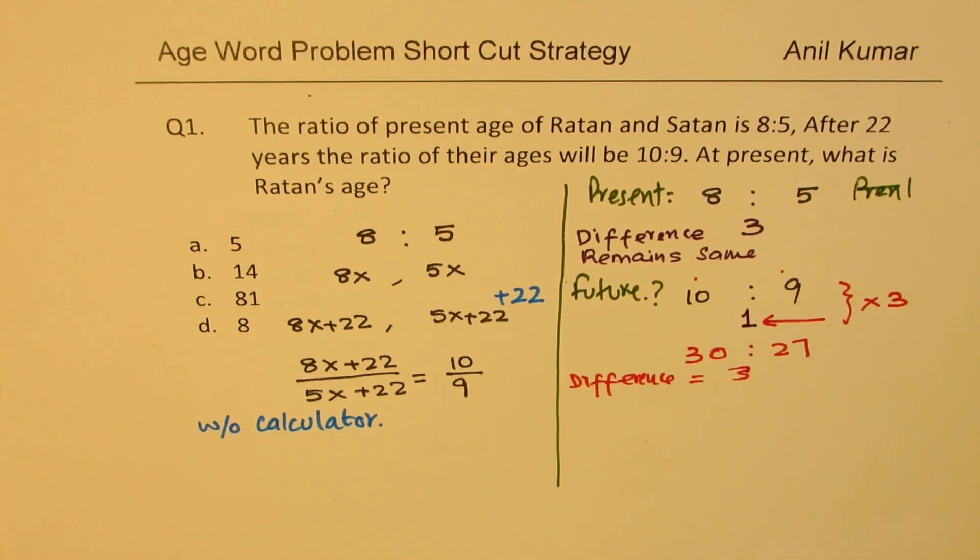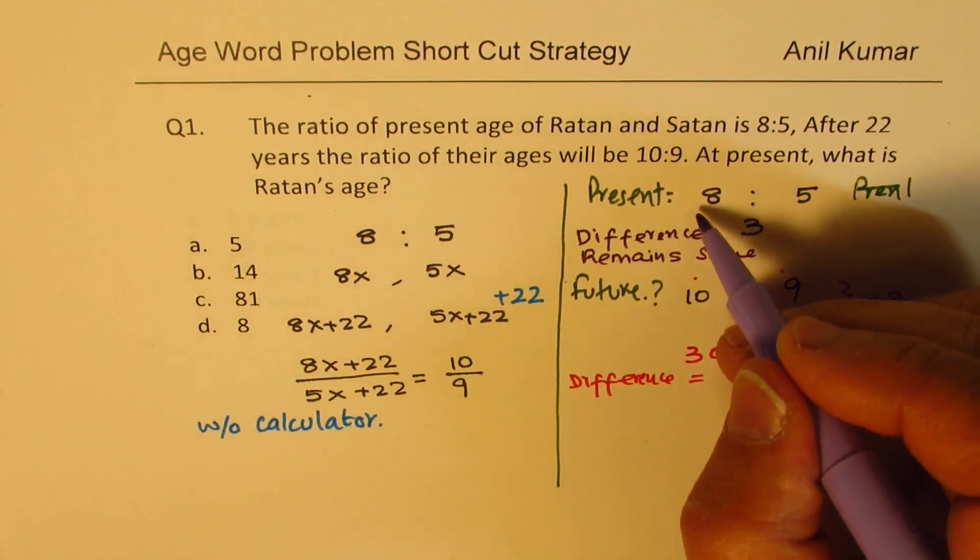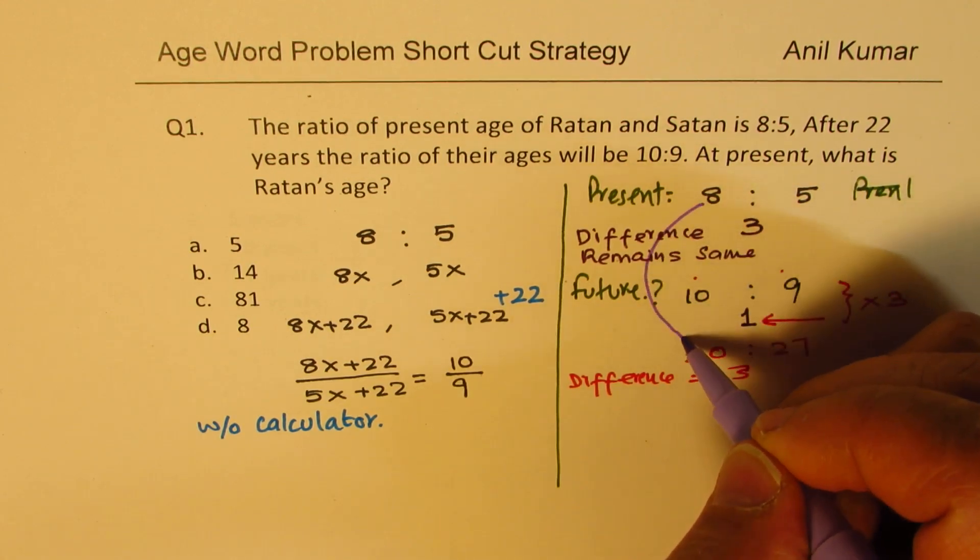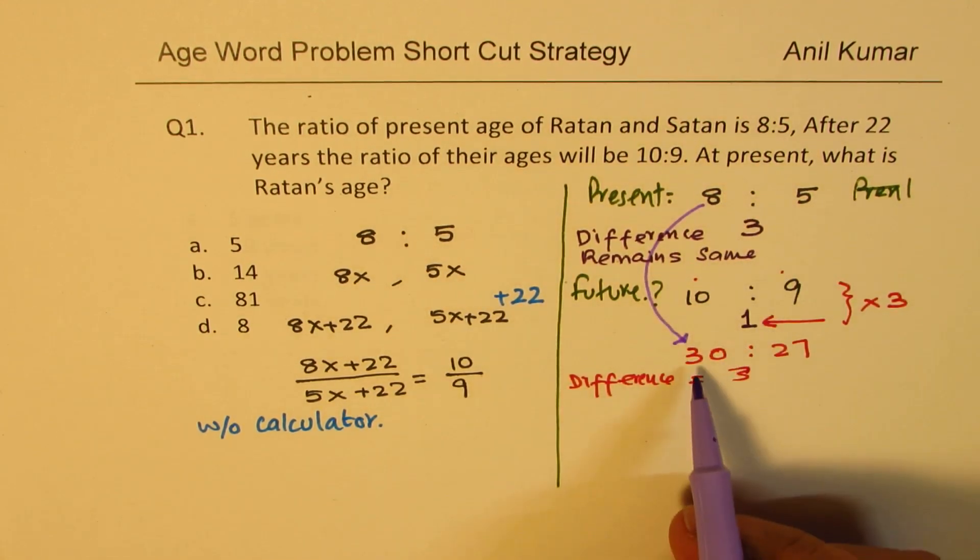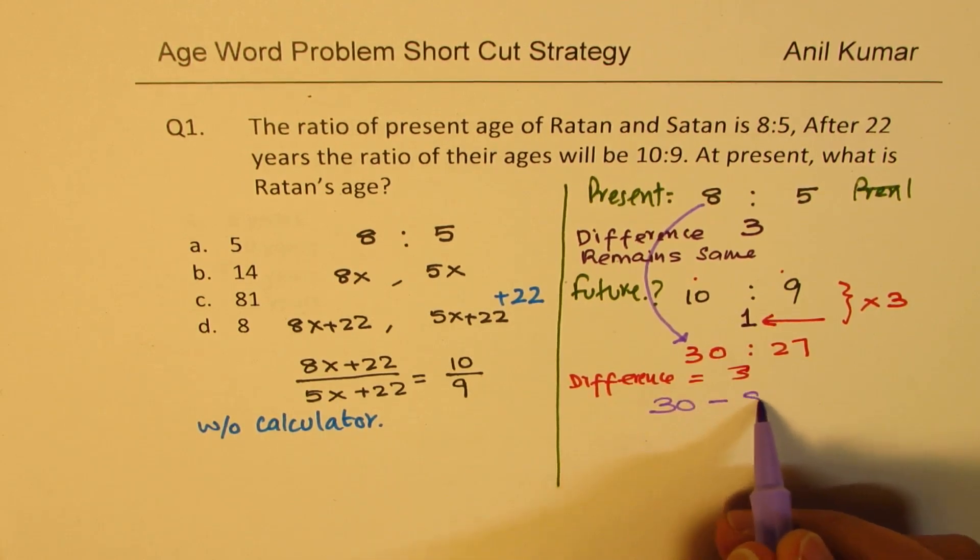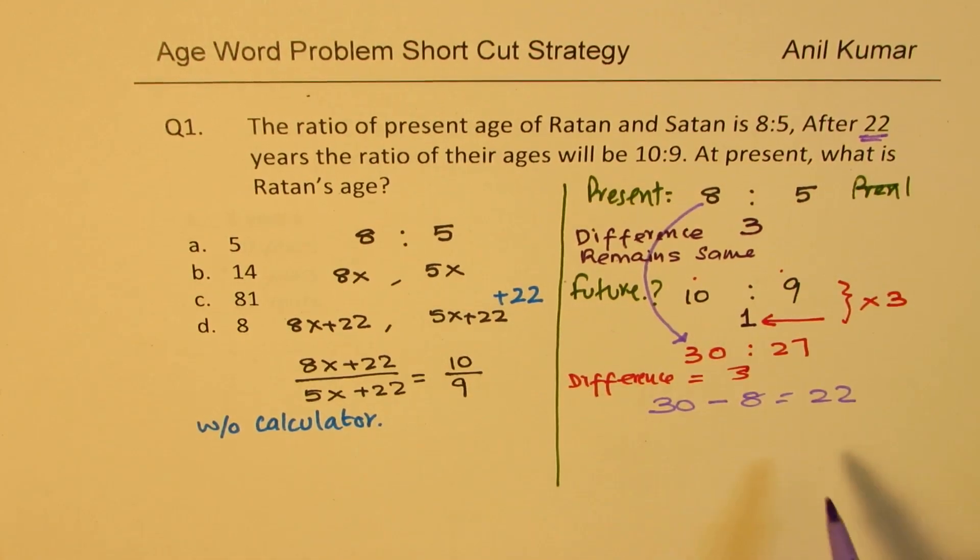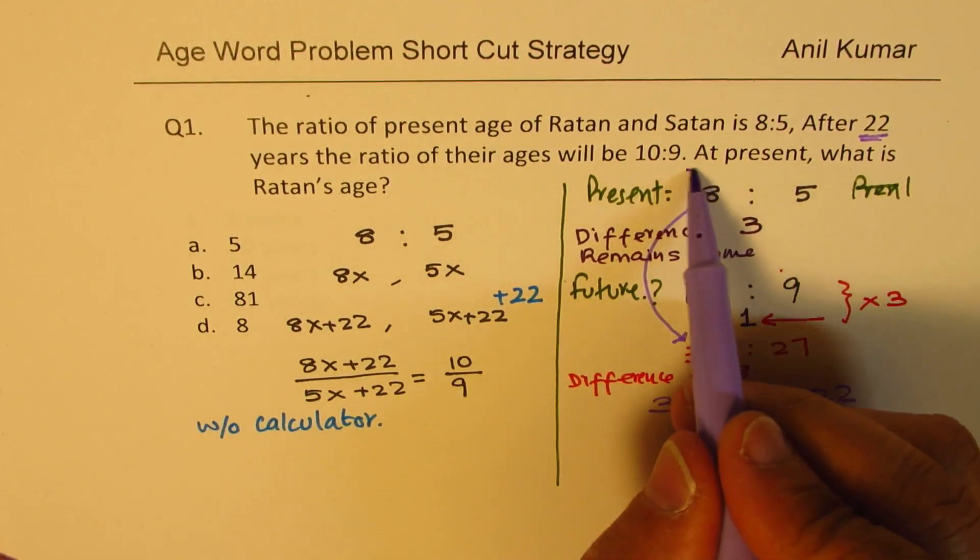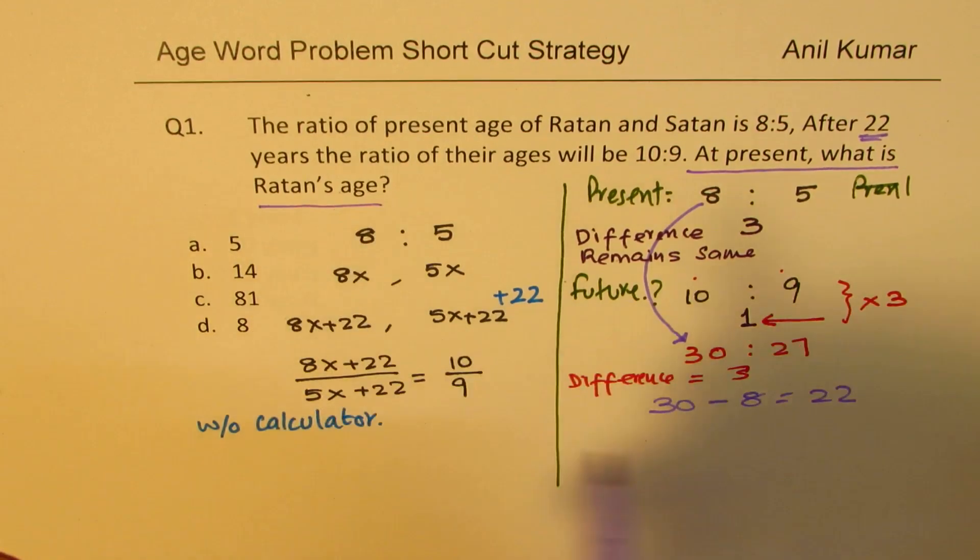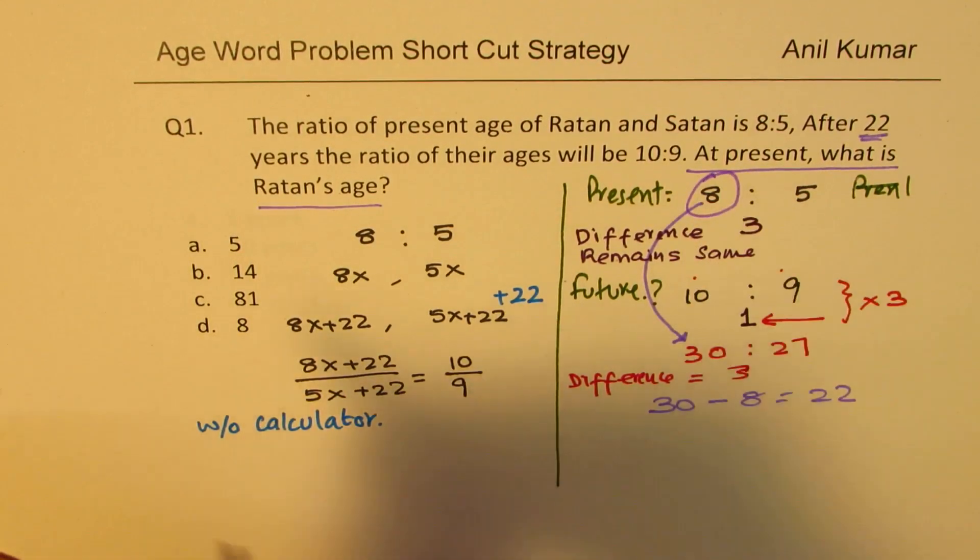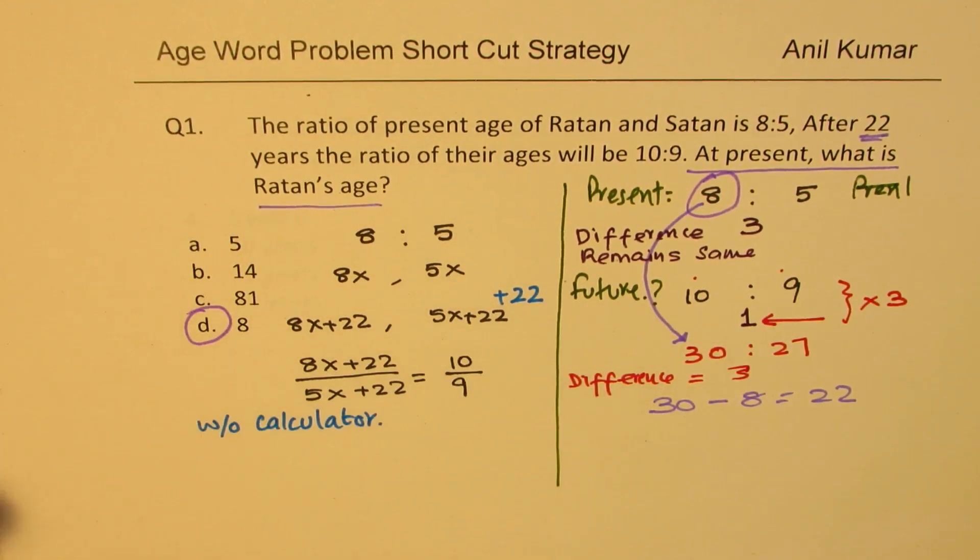Now what we are going to check here is to see the change in years. Present age 8 and future age 30. What is the difference? 30 minus 8 is 22. So we get our 22 years. The question says, at present, what is Ratan's age? Well, at present it is 8. So we get option D.